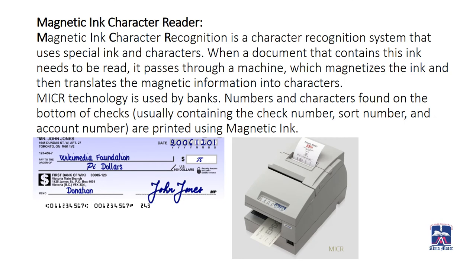Second, we have the magnetic ink character reader. Magnetic ink character recognition (MICR) is a character recognition system that uses special ink and characters. When a document containing this ink needs to be read, it passes through a machine which magnetizes the ink and then translates the magnetic information into characters. MICR technology is used by banks. Numbers and characters found at the bottom of checks — usually containing the check number, sort number, and account number — are printed using magnetic ink.